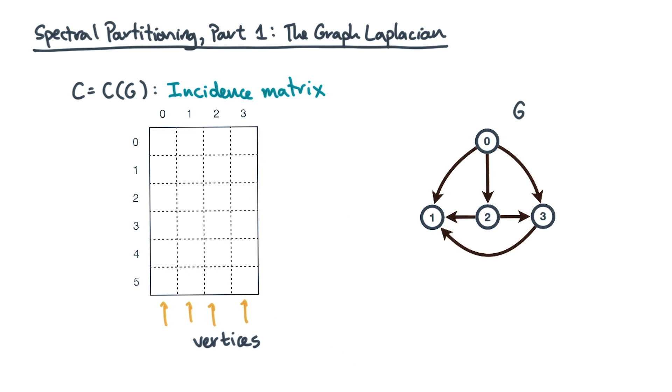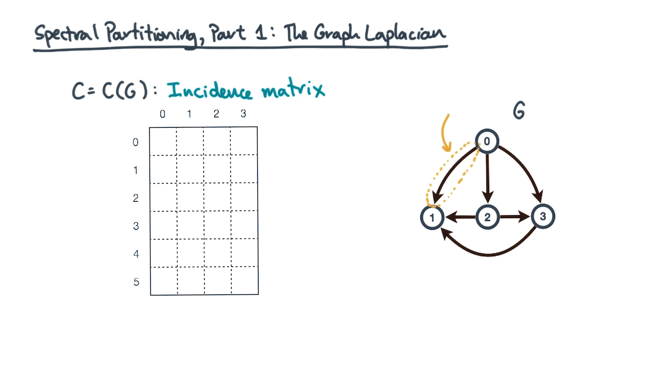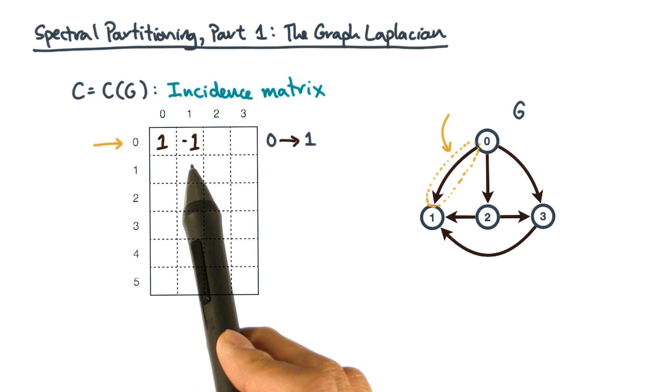How do you mark edges? Let's take this edge as an example. It points from vertex 0 to vertex 1. Let's make it the first edge in the incidence matrix, and let's mark it using the following convention. We'll put a positive one at the source vertex and a minus one at the sink. Let me fill in the rest.